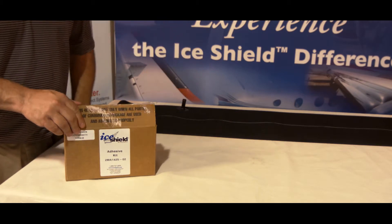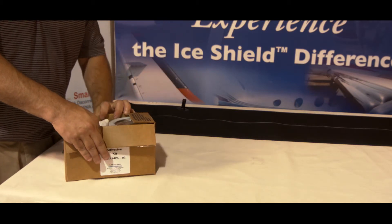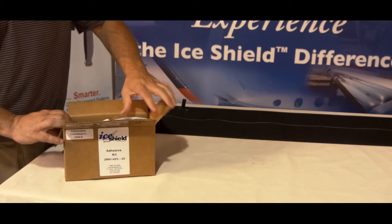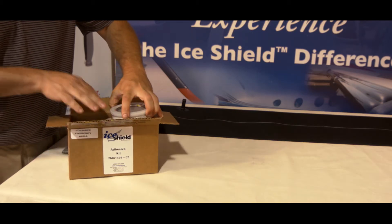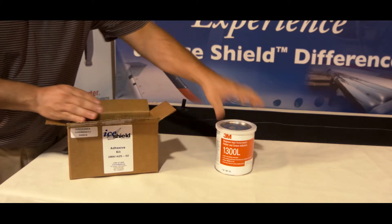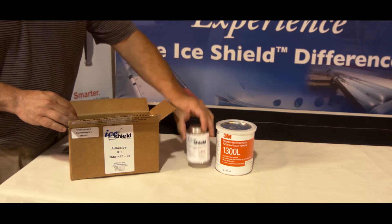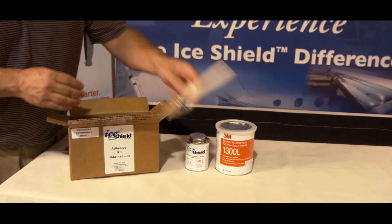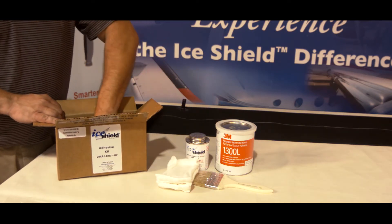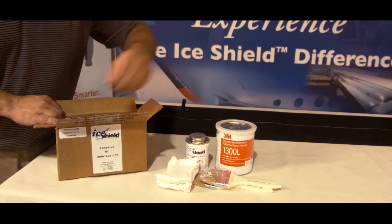Next, prepare a work surface of sufficient size to lay out all de-icers being installed. You can use craft paper or a clean cloth covering to cover the work surface. Note, do not use polyethylene or other plastic coverings as they would interfere with the adhesive application.